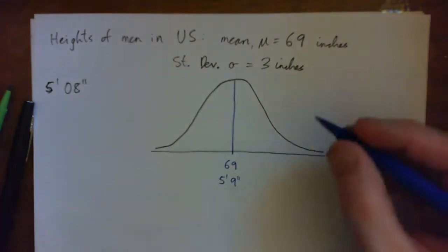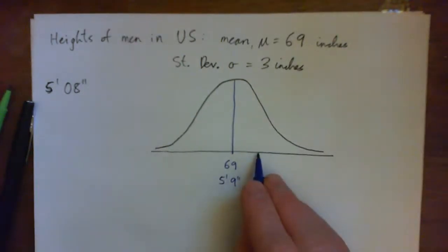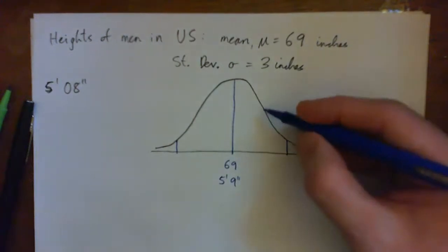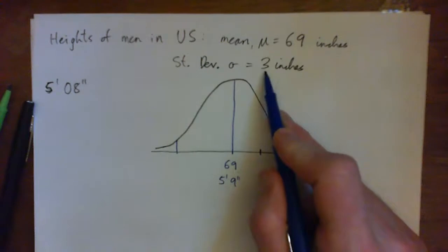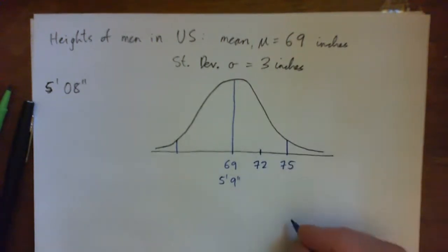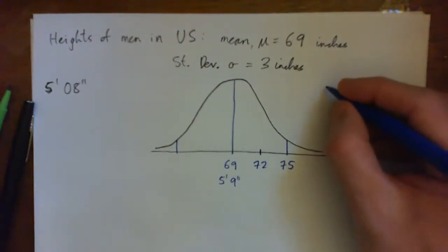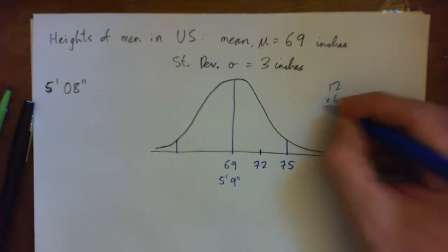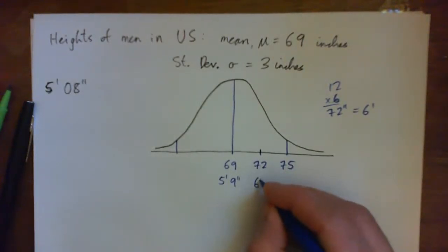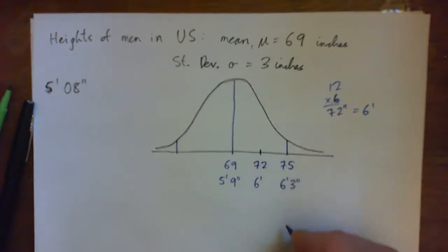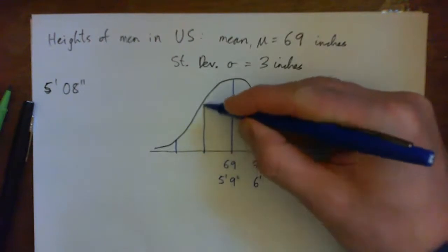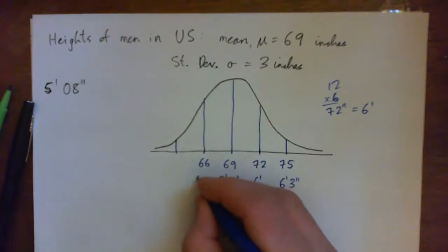There are about two standard deviations up at the tail and two standard deviations down. Going up one standard deviation: 69 plus 3 is 72 inches, which is 6 foot. Going up two standard deviations: 72 plus 3 is 75, which is 6 foot 3. Going down one standard deviation: 69 minus 3 is 66, which is 5 foot 6.